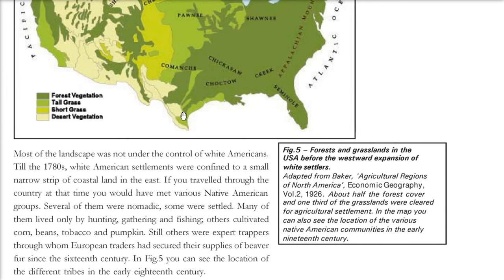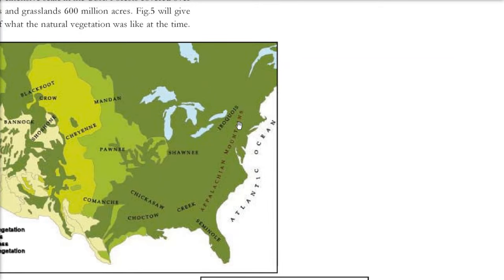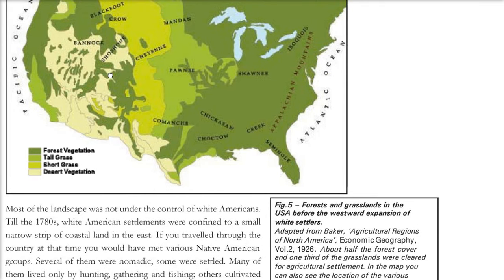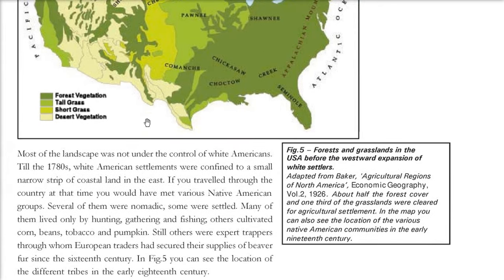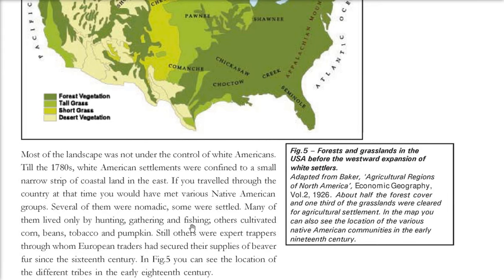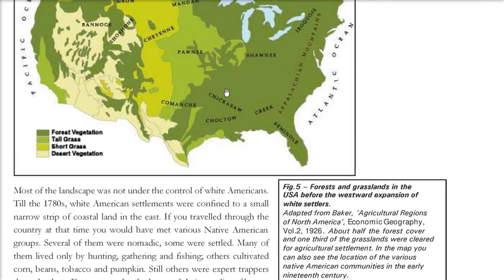Most of the landscape was not under the control of white Americans. Till the 1780s, white American settlements were only confined to a very small strip. The nomadic natives used to live across these various regions — doing hunting, gathering, fishing, and cultivating corn, beans, tobacco, and pumpkin. Some were expert trappers who would sell beaver fur to European traders in the 16th century.